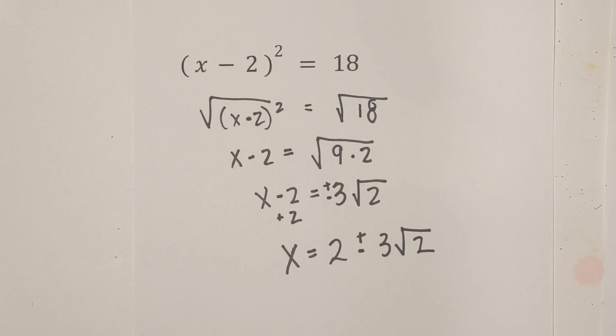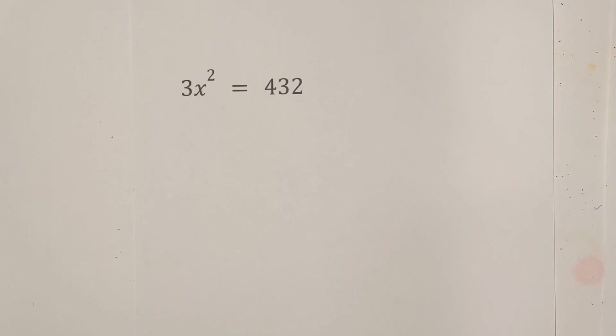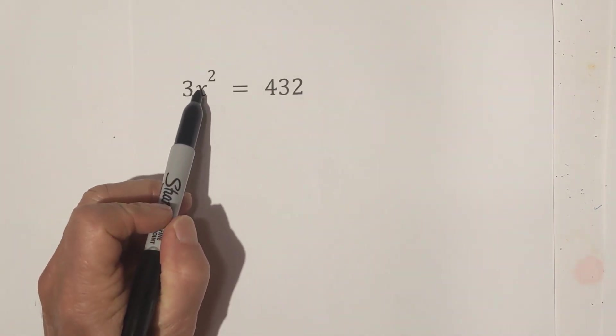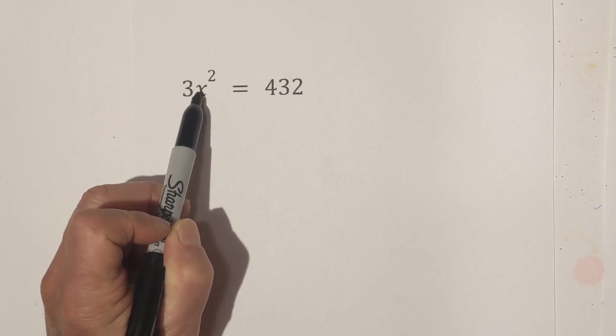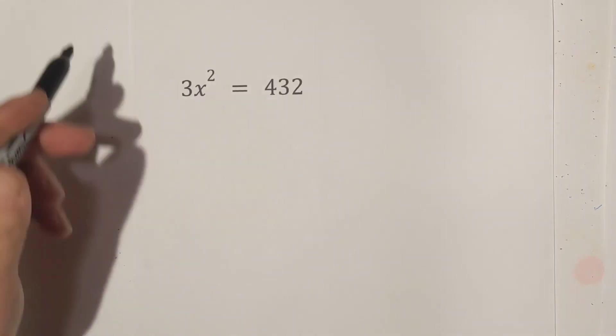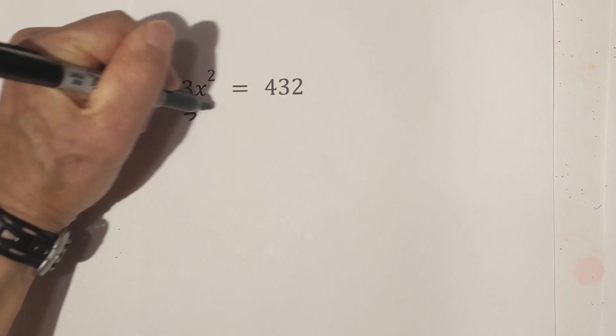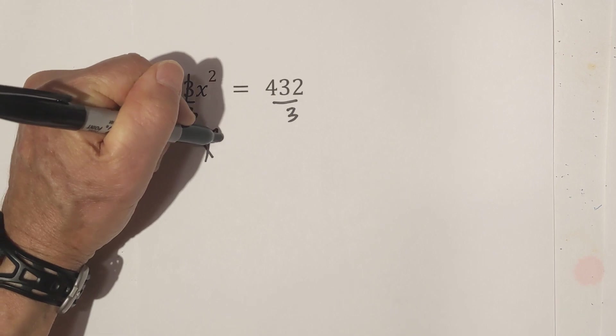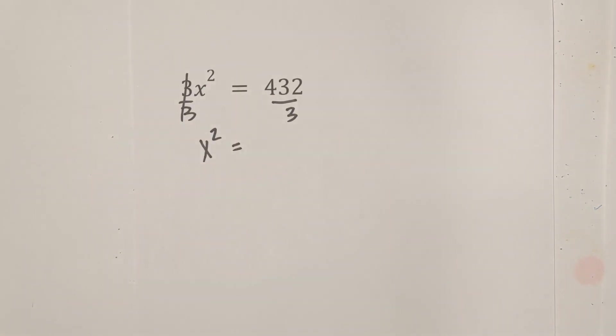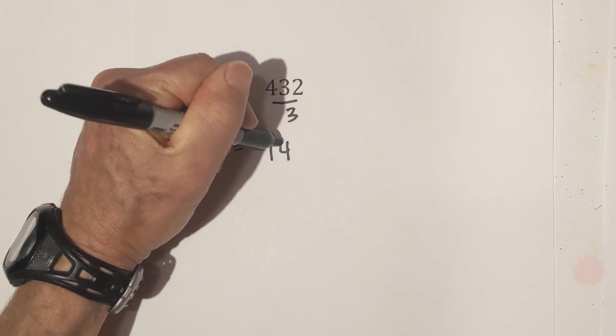Let's work two more examples you may encounter. With this example, remember the square is attached to the x, not the 3. So we need to get x squared by itself. So we're going to divide both sides first by 3. These cancel. So we have x squared equals 432 divided by 3 is 144.